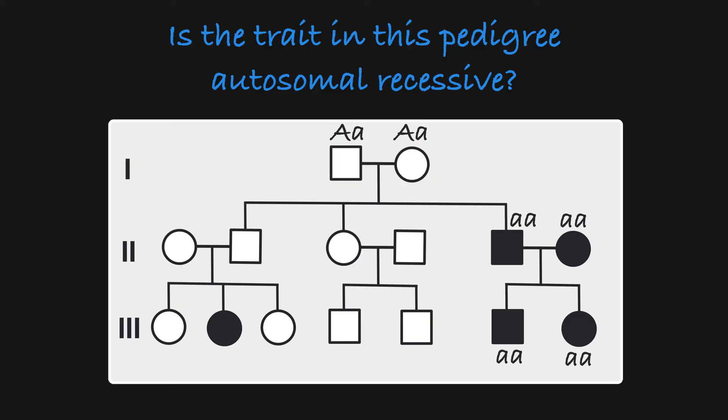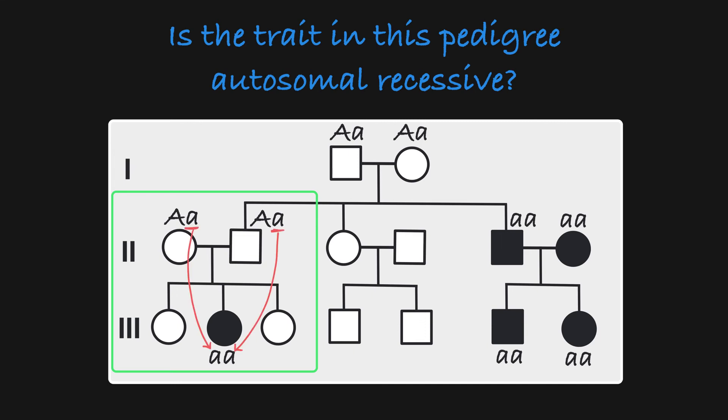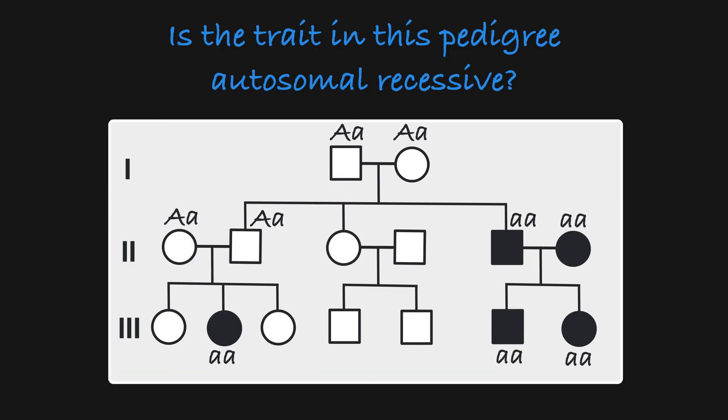Now if we look over here, we can see that we have two unaffected parents with some unaffected children and an affected child. If this child is affected, then these parents must both be heterozygous, which is possible given the rest of the information we have here. So this pedigree is a good example of one in which the trait could be inherited in an autosomal recessive manner.